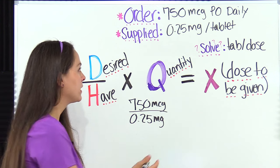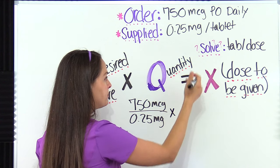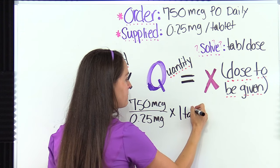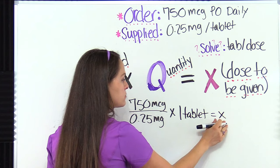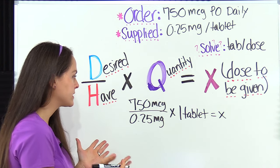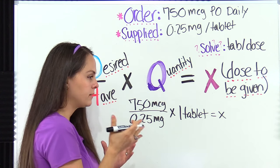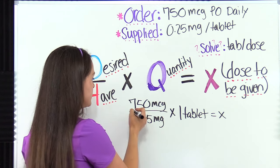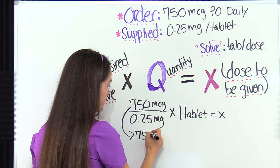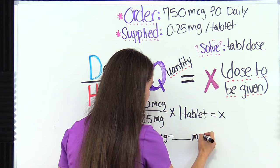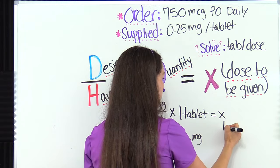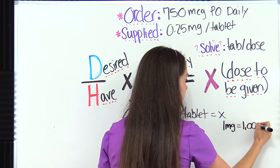We'll finish filling out the formula first. We multiply by the quantity: one tablet equals 0.25 milligrams, so one tablet. That equals X, our dose to be given. Now we take that extra step and convert. Since we're holding milligram tablets, we'll convert the doctor's order from micrograms into milligrams. So: 750 micrograms equals how many milligrams? From our metric table, one milligram equals 1,000 micrograms.